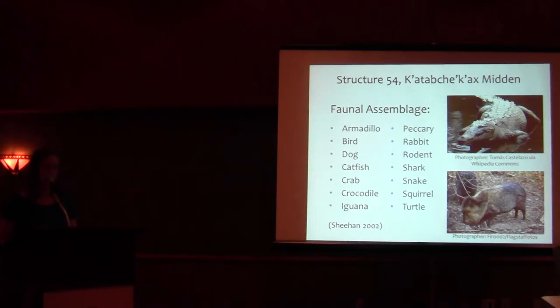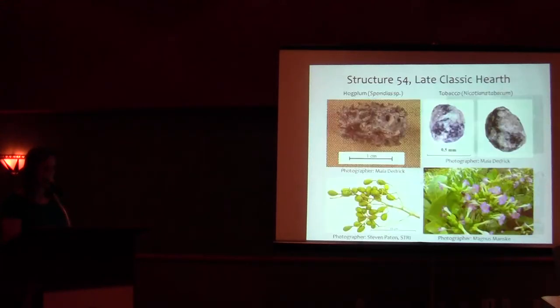So moving to the late classic, we expand the botanical analysis to a comparison between two roughly contemporaneous hearths, located in adjacent Structures 54 and 89. The hearth within Structure 54, which is built on top of the rich K'atabche'k'ax midden, contained a low ratio of seeds to charred wood, as well as a hog plum seed and a tobacco seed.